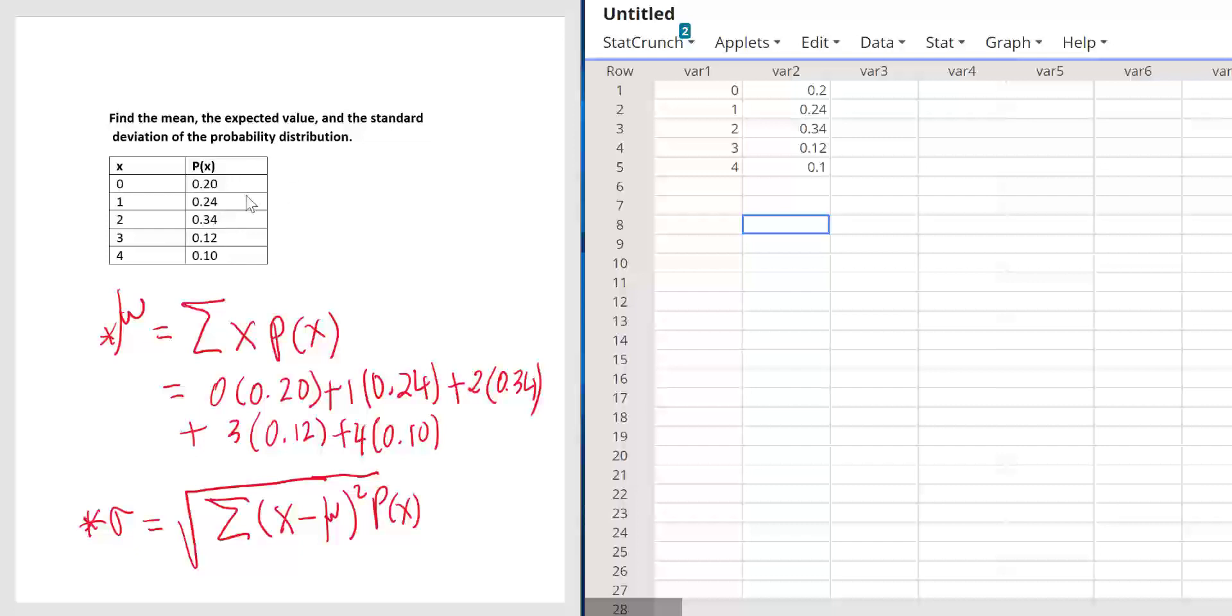Here is how you do this in StatCrunch. There is a formula. You could use the mean equals sum of x times p(x), and then take the value of x, which is 0, times the corresponding probability 0.20, plus 1 times 0.24, plus 2, and so on. And then there is a formula for the standard deviation, which is a little bit more complicated. You don't need to use those formulas. Let me show you how to use StatCrunch.